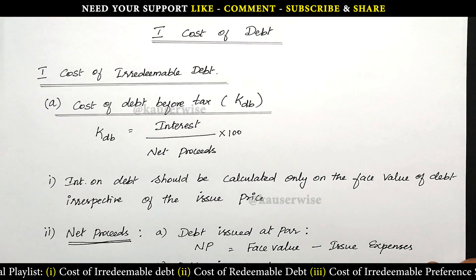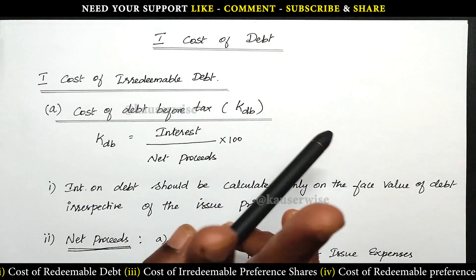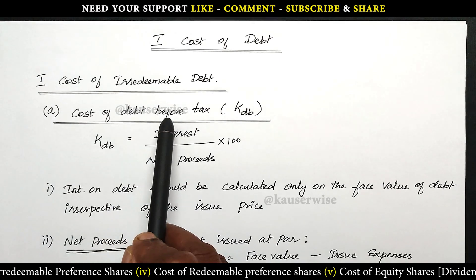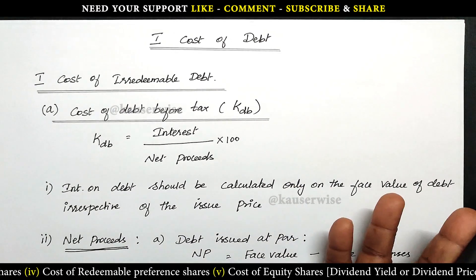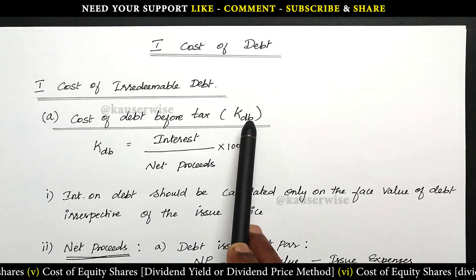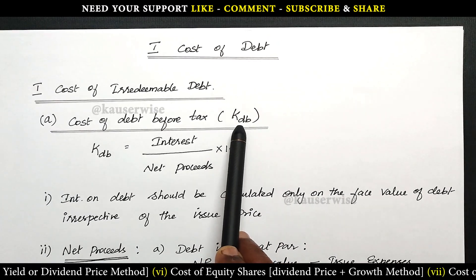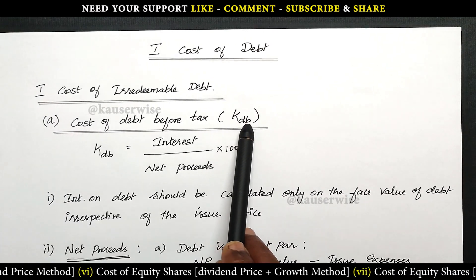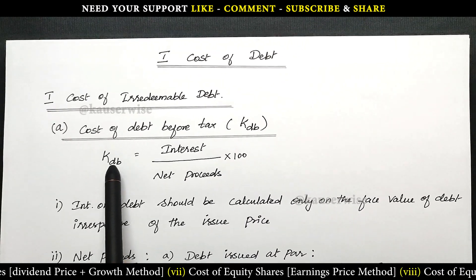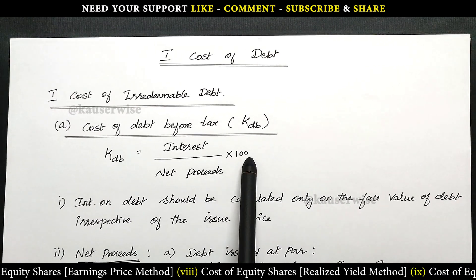First we are going to find out the cost of irredeemable debt. It has two different calculations — one is cost of debt before tax, and the second one is after tax. There is a formula to find out cost of debt before tax. Here K refers to cost, D refers to debt, and B refers to before tax. So KDB refers to cost of debt before tax. The formula is: interest divided by net proceeds, multiplied by 100.